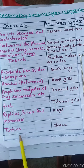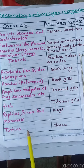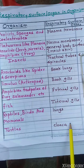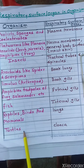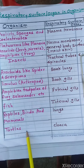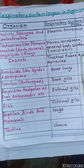The last animal is the turtle. In turtles, gas exchange takes place with the help of the cloaca, which is the respiratory organ in the case of turtles. Here I am ending today's lecture. Thank you.